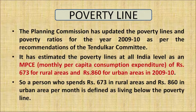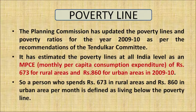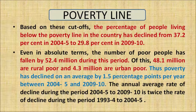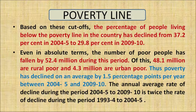The poverty line was estimated at the all-India level as monthly per capita consumption expenditure, or MPCE, of rupees 673 for rural areas and rupees 860 for urban areas. A person who spends less than rupees 673 in rural areas or less than rupees 860 in urban areas per month is defined as a person below the poverty line. Based on these cutoffs, the percentage of people below the poverty line declined from 37.2 percent in 2004-05 to 29.8 percent in 2009-10. In absolute terms, the number of poor people fell by 52.4 million — 48.1 million rural poor and 4.3 million urban poor.